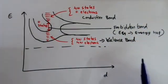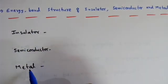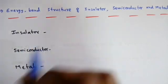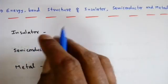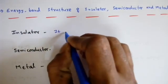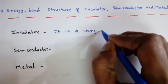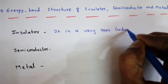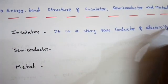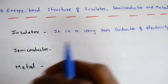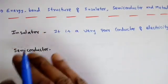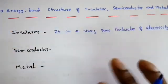First we will define what an insulator, semiconductor, and metal are. An insulator is a very poor conductor of electricity — there is no current flow in these materials. Even if we apply any amount of energy or electric field, there is no movement of electrons, and therefore no current at all.